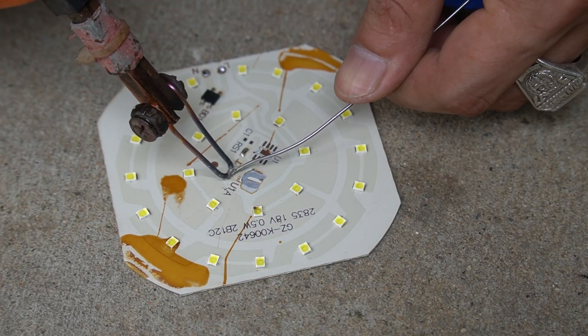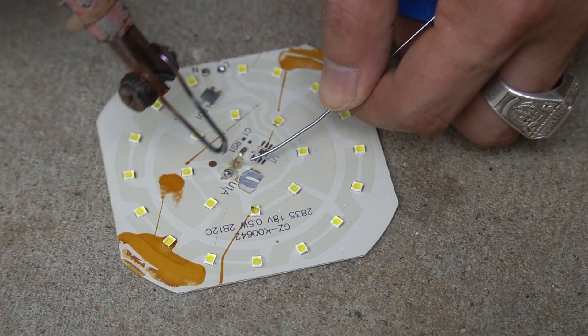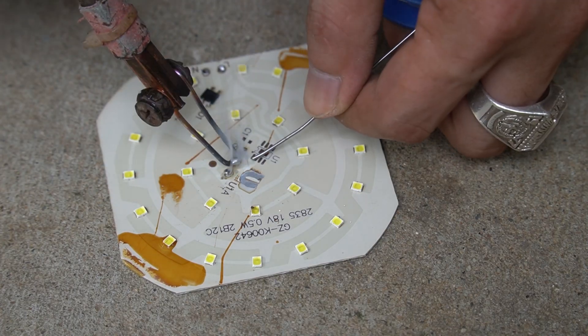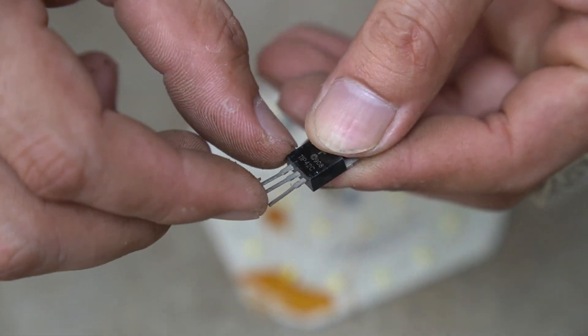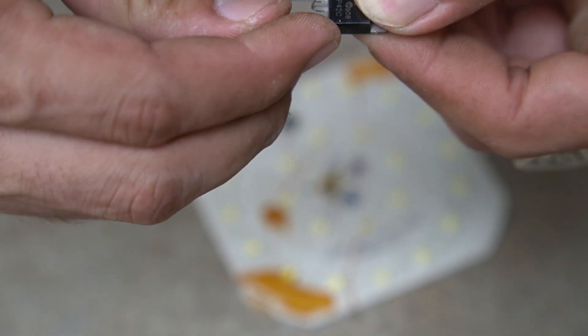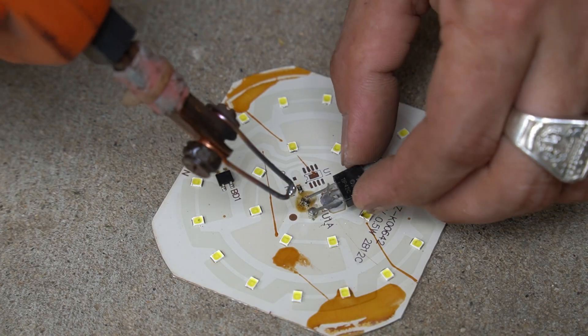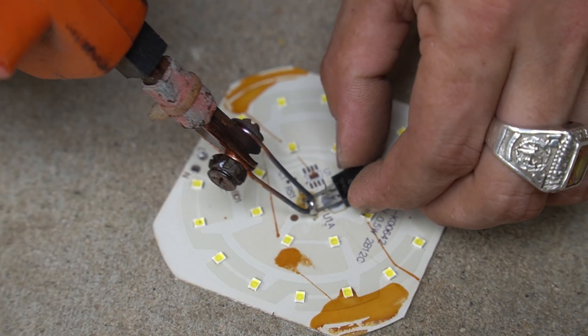I smeared some tin on the point where the capacitor was removed. Then I use a mosfet solder to the spot I just tinned. Solder carefully because the weld points are very close together.